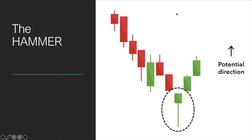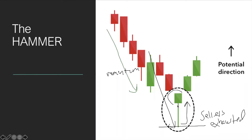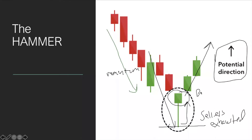The hammer pattern appears when prices are going down — sellers are pushing prices lower and lower — and then suddenly they turn it up because sellers are exhausted and buyers come back in. At the end of the period, the price after going low turns up and goes higher. This usually signals a bullish potential direction, as sellers are exhausted and buyers take over, causing a change in direction.